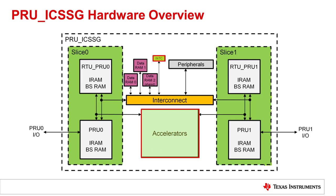As the names imply, the data processing accelerators help the PRU ICSSG cores more efficiently process data, while the data movement accelerators help the cores more effectively move data in and out of the PRU ICSSG subsystem. A few accelerators are shared between all cores in the subsystem, others are shared between the cores in a given slice, but most accelerators have separate instances for each PRU ICSSG core. Please note that there are some differences between the accelerators supported for different cores in the PRU ICSSG, as well as between different devices. The accelerators associated with each PRU ICSSG core can be found in your device technical reference manual, or TRM.